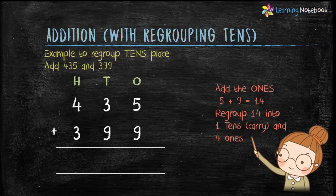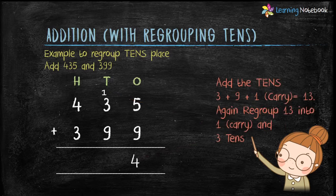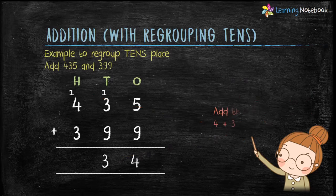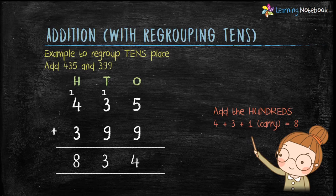Write 4 in the ones column and 1 acts as a carry to the tens place. Now add the digits at the tens place: 3 plus 9 plus 1 (the carry) equals 13. Regroup 13 into 1 carry and 3 tens. Write 3 at the tens place and 1 acts as a carry to the hundreds place. Add the hundreds: 4 plus 3 plus 1 (the carry) equals 8. So our answer is 834.